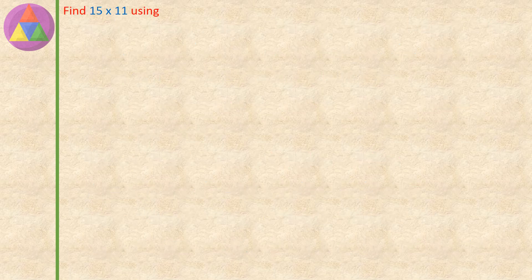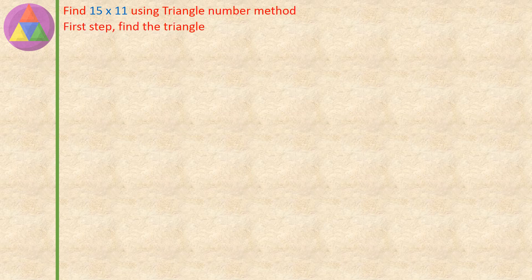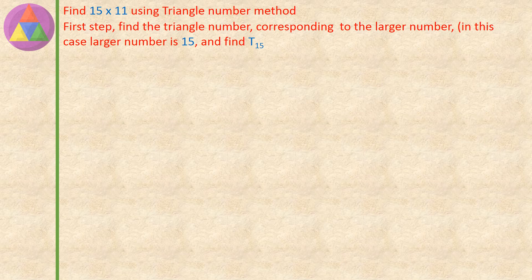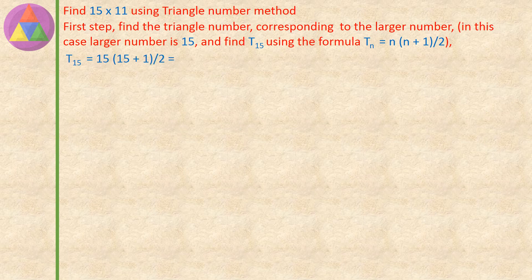Find 15 into 11 using the triangle number method. First step: find the triangle number corresponding to the larger number. In this case the larger number is 15. T15 equals 15 into (15 plus 1), divided by 2, equals 15 into 16, divided by 2, equals 240 divided by 2, equals 120. So T15 value is 120.